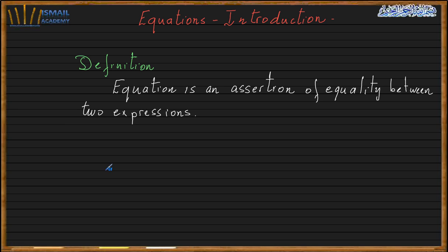As you can see, the definition is totally clear. An equation is an assertion. What does assertion mean? It means a declaration. So it is a declaration of equality — and when we make a declaration, it may be true or it may be false. That's the idea.